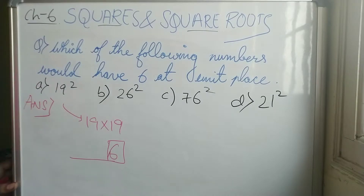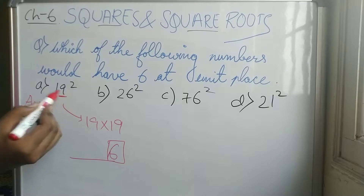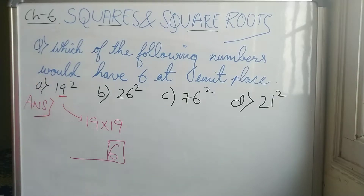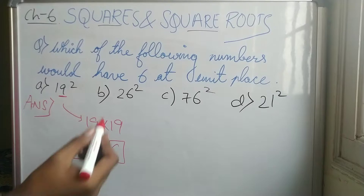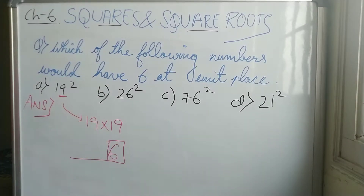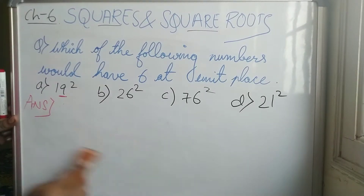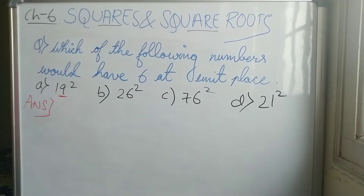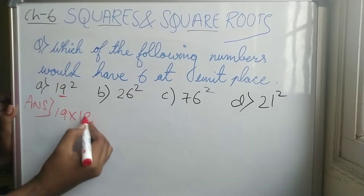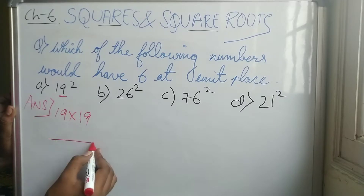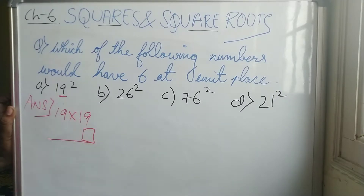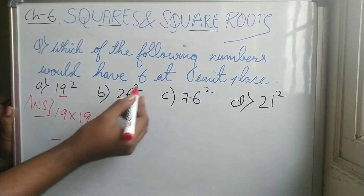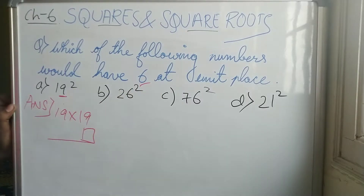No need to multiply all these numbers. If you are asked to identify whether the last digit or unit place will be 6, you just need to see the last unit digit of the base number in the question. For 19 squared — that is 19 into 19 — but there is no need to do the full calculation. You just have to check whether the unit digit is 6 or not.